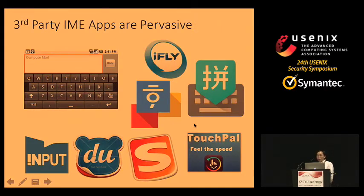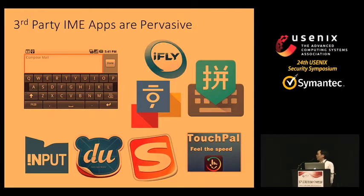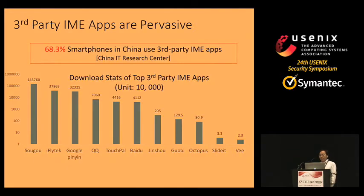Modern smartphones use third-party IME apps to improve the experience of user phone interaction. Currently, third-party IME apps are pervasively used, as evidenced by thousands of such apps available for download in major markets like Google Play. Several such IME apps have been installed hundreds of millions of times. A report from China IT Research Center indicated that at least 68% of smartphones in China use third-party IME apps.